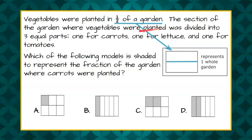Now the section of the garden where the vegetables were planted was divided into three equal parts and one of them was for carrots. That's what we're determining here - the carrots in the garden. So we know that one of them was for carrots, but first let's take our vegetables and divide it into three equal parts.